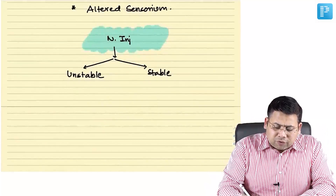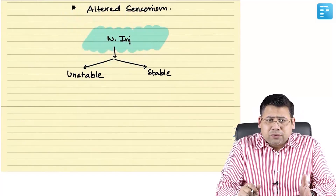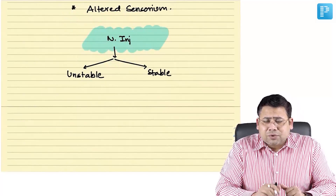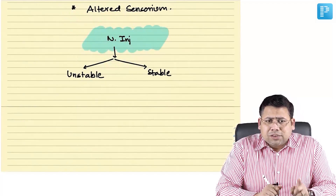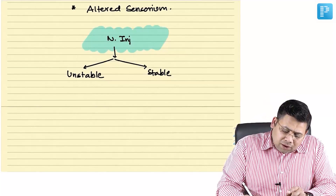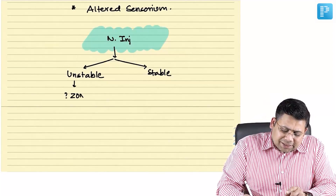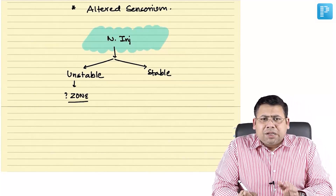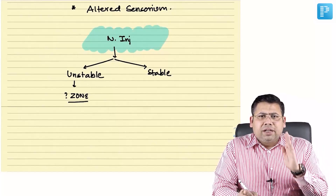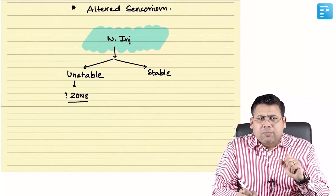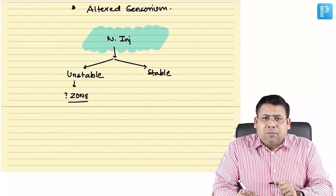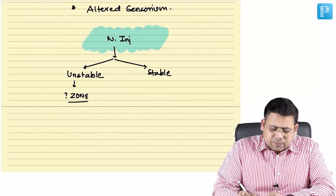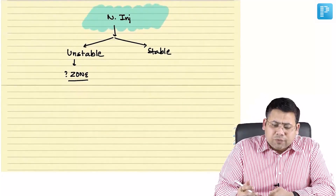Before going for surgery, the zone of injury matters. For zone 2, you go for urgent neck exploration directly. For zone 1 or zone 3, since a single incision is not enough — you would need sternotomy or mandibulotomy — which is time-consuming and you might lose the patient. So you must form a zone-wise approach.